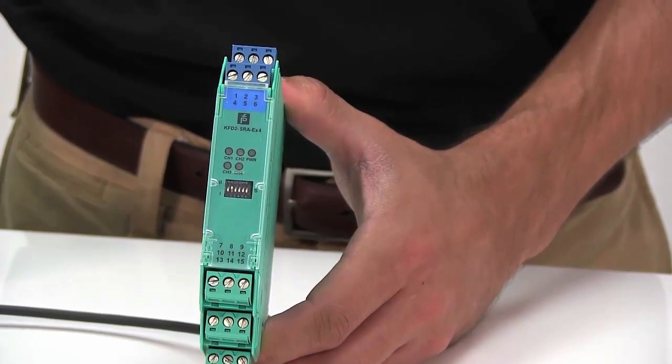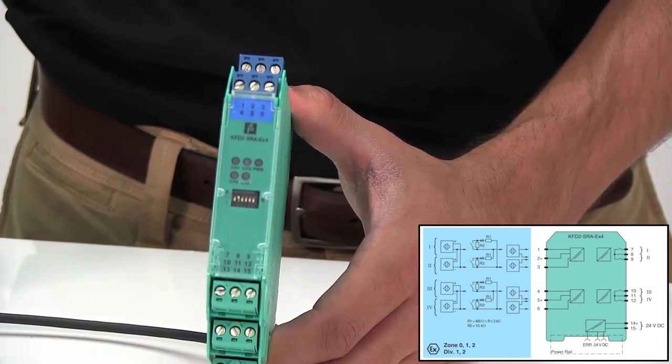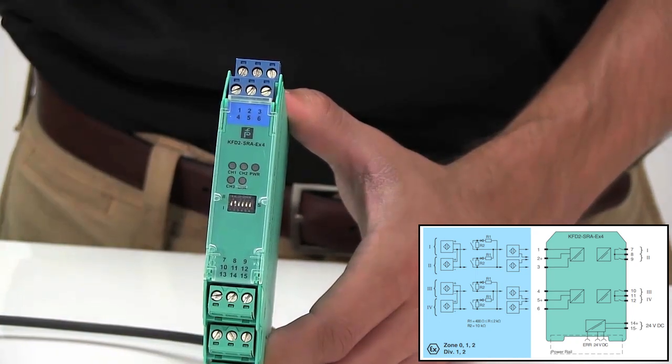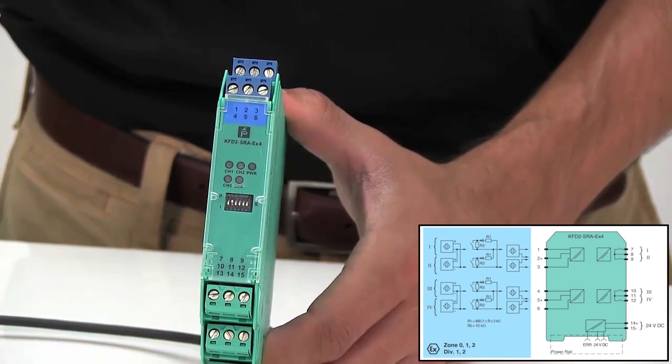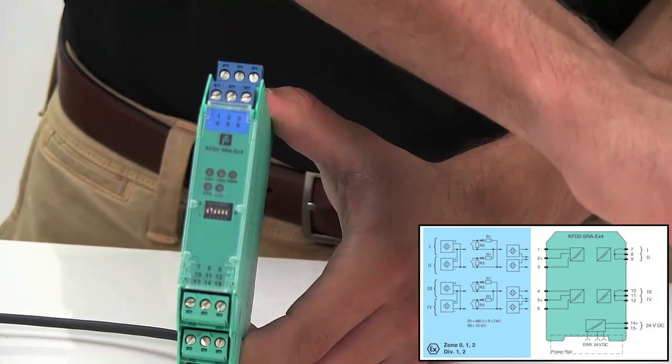To connect the NEMOR output sensor to the intrinsically safe barrier, we see that the wiring diagram of the barrier denotes terminals 2 and 1 as the positive and negative input terminals. The brown wire goes to positive terminal 2, and the blue wire goes to negative terminal 1.